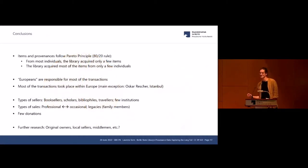Sorry for these conclusions, they are very modest as I said, but just to wrap this up. Items and provenances follow this 80-20 rule, so from most individuals the library acquired only a few items, whereas the library acquired most of the items from only a few individuals. Europeans are responsible for most of the transactions, and most of the transactions took place actually within Europe.